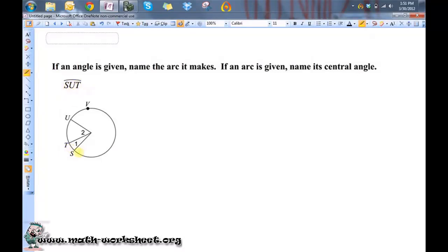Whenever an arc is inscribed using three letters, it's essentially telling you the direction around the circle that you need to take. You need to go from S to U to T. You start at S, you end at T, and you have to pass U on your way to T.